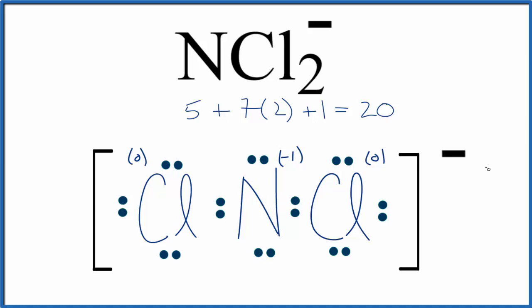If you need help with the molecular geometry or the bond angles, there's a link in the description to NF2 minus, which has the same molecular geometry and bond angles, which is a bent molecular geometry. This is Dr. B with the Lewis structure for NCl2 minus. Thanks for watching.